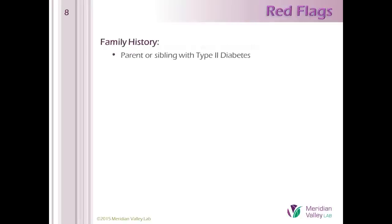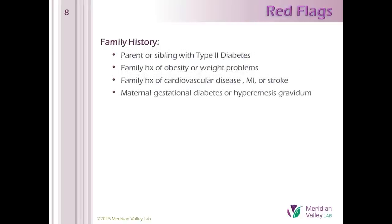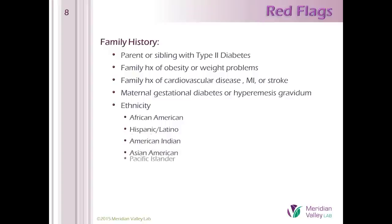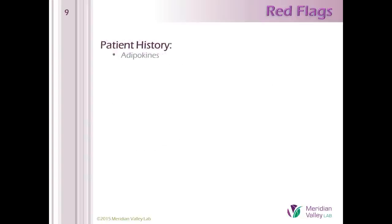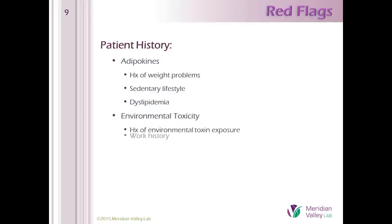Let's start with red flags that should alert us to increased risk of developing insulin resistance. A complete family history taking into account diabetes, obesity, and cardiovascular disease is essential. If your patient's mother had gestational diabetes or did not gain enough weight during pregnancy, that could put your patient at increased risk. Ethnic differences occur in insulin resistance, with greater prevalence among African Americans, Hispanics, American Indians, Asian Americans, South Asians, and Pacific Islanders. Toxic exposures through work and diet can also be contributing factors, as can the obesogens Dr. Kaplan discussed.